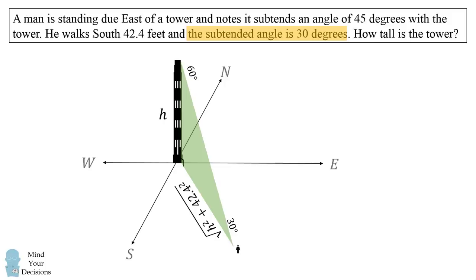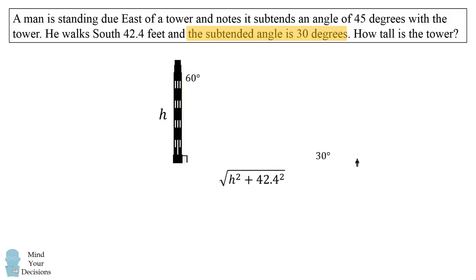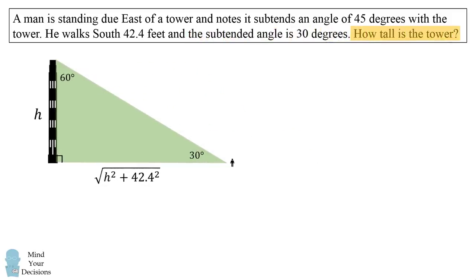So let me just rotate this diagram so it's a little easier to see. We know that the leg opposite 30 degrees is h and the leg opposite 60 degrees is the square root of the quantity h squared plus 42.4 squared. So how tall is the tower?